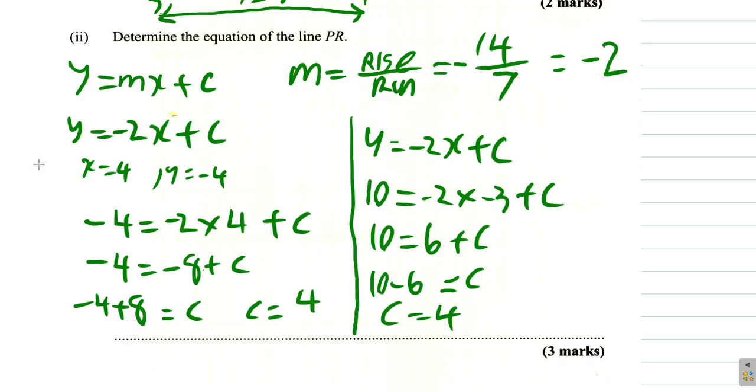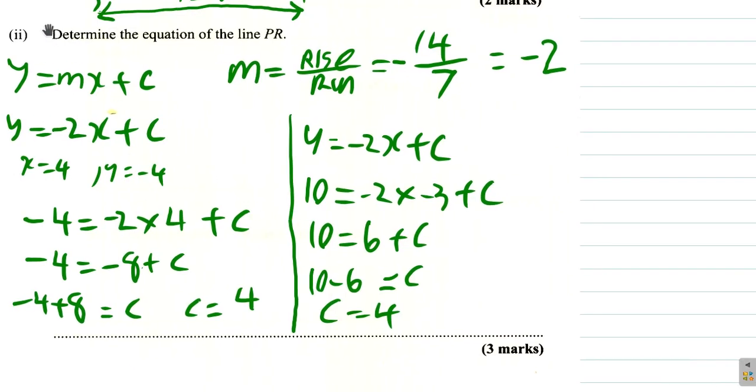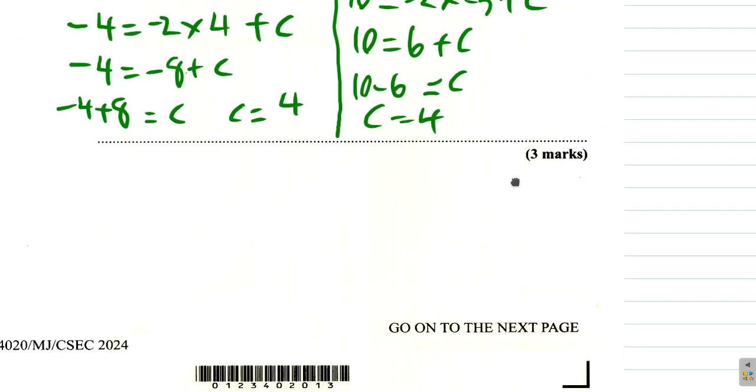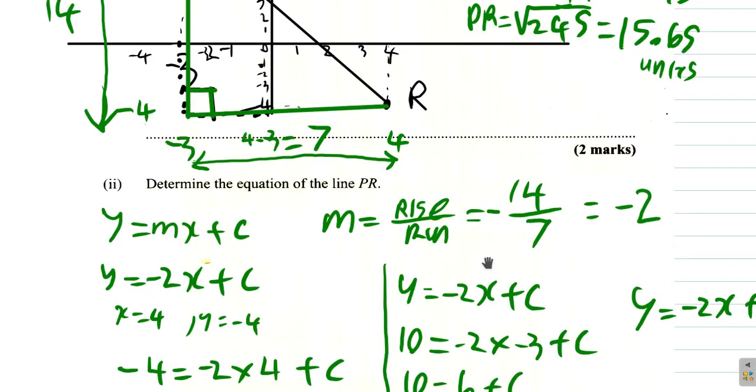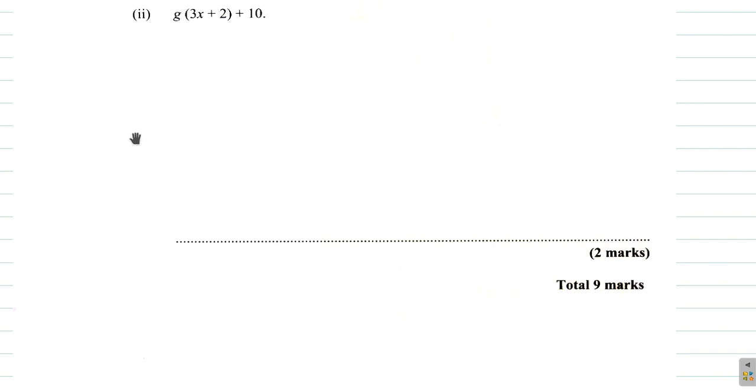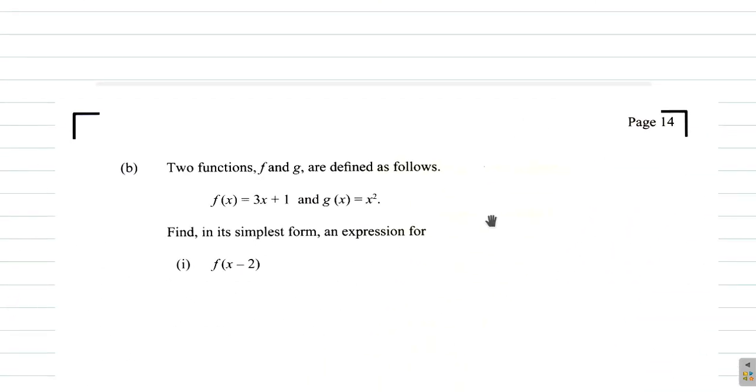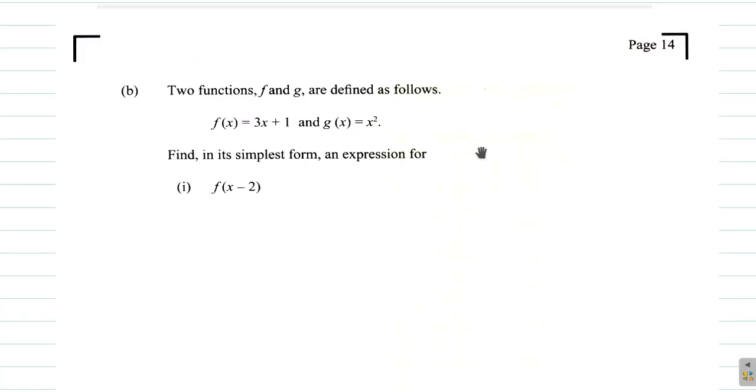What we're really asked for is the equation of the line, so the equation of the line is y equals negative 2x plus 4. That is the equation of the line. Let's look at the functions part of the question next time.